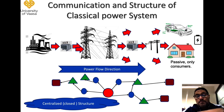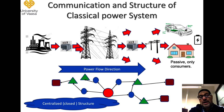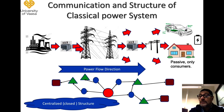Let us go through a general structural map of the classical power system. In a classical power system, it is a centralized and closed power network, where power is generated from the generation side and goes through transmission to distribution. We have step-up and step-down of voltages. The operation goes in one direction — the power flow is usually from generation to consumers.